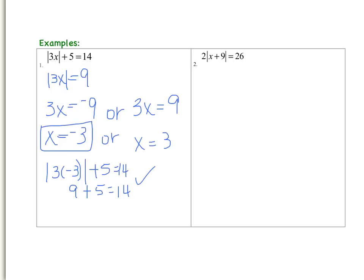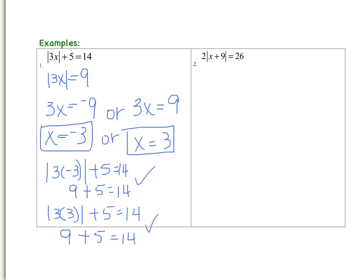Now let's use positive 3 and substitute it for x to see if that equation is still true. So I have the absolute value of 3 times positive 3 plus 5, and it should equal 14. The absolute value of 3 times 3 is the absolute value of 9, which is 9. So I have 9 plus 5 equals 14. So that one is also true. So I have two solutions to example 1.